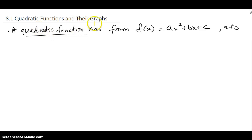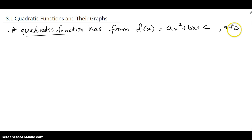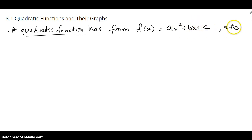In this section we're going to look at quadratic functions and their graphs. A quadratic function has the form f(x) = ax² + bx + c, where a doesn't equal 0. Because if a is 0, this part completely drops and you end up with bx + c, which is just a linear function. So a has to be a non-zero number to keep it quadratic.